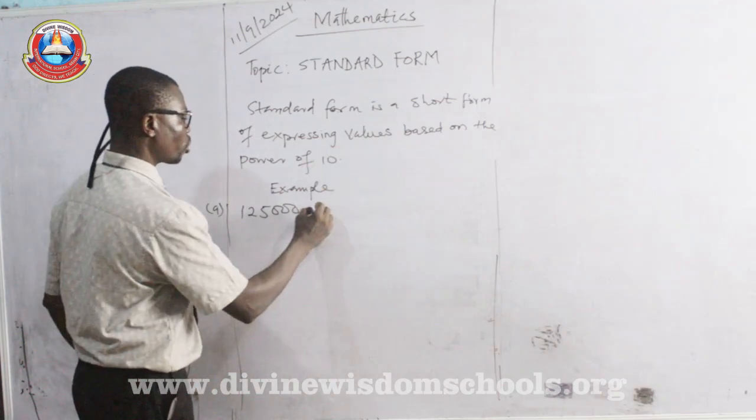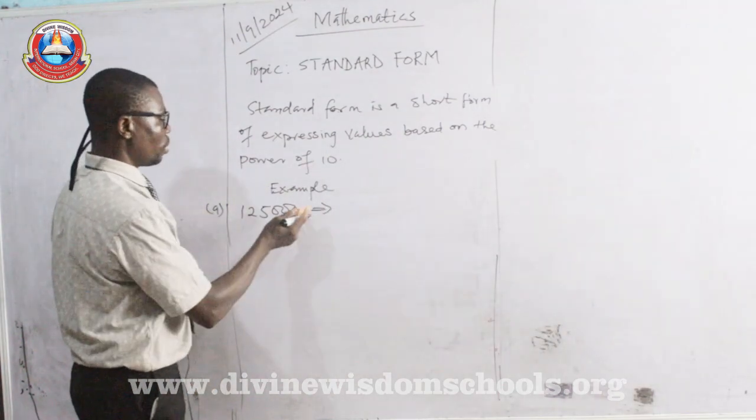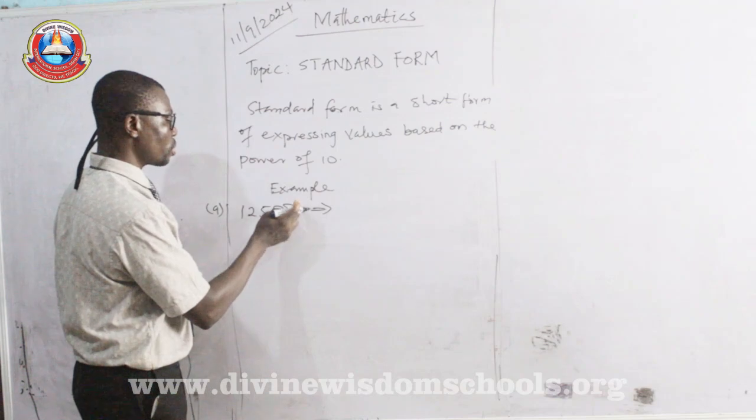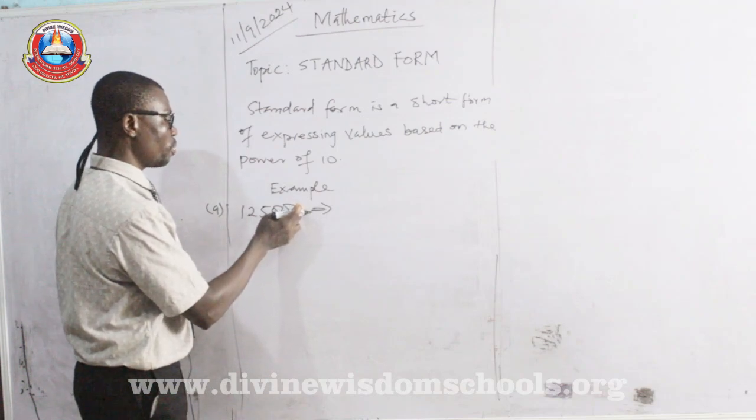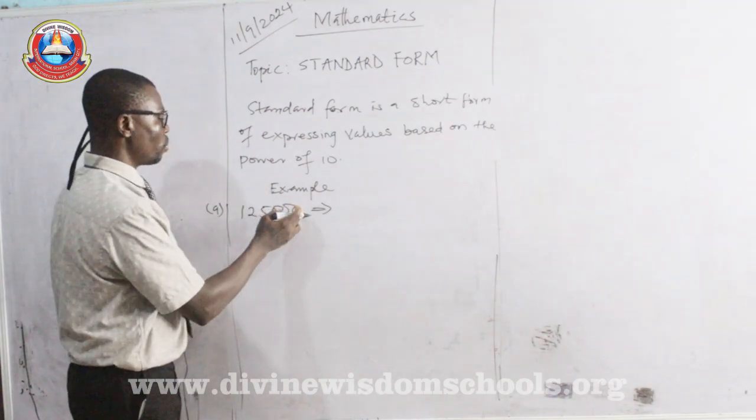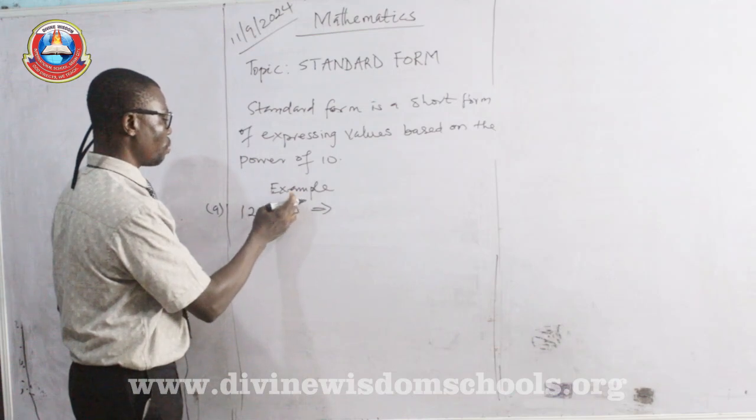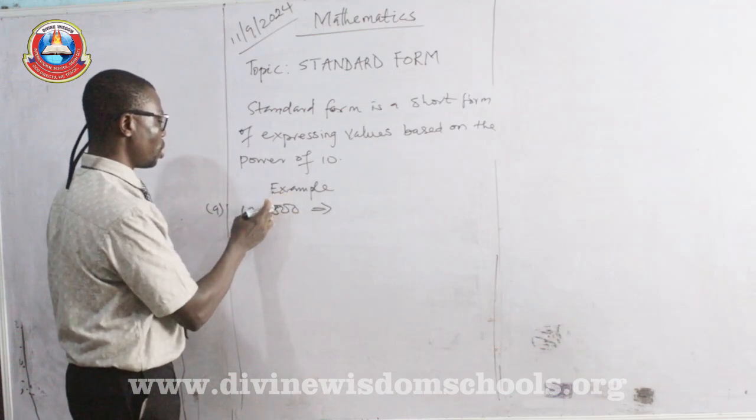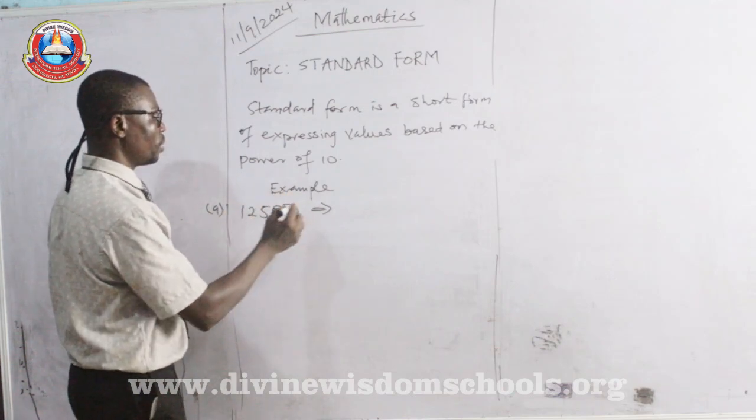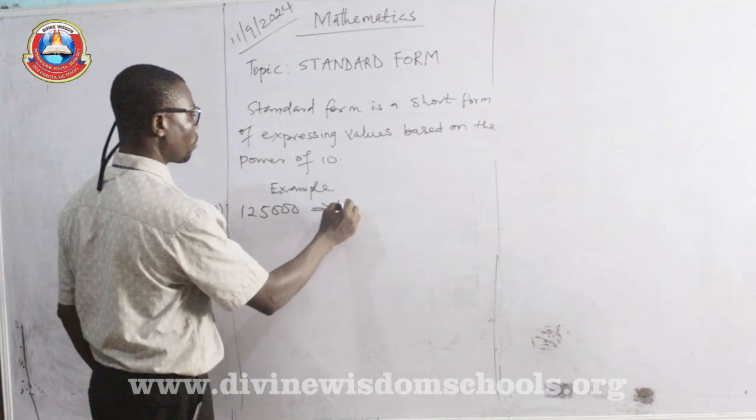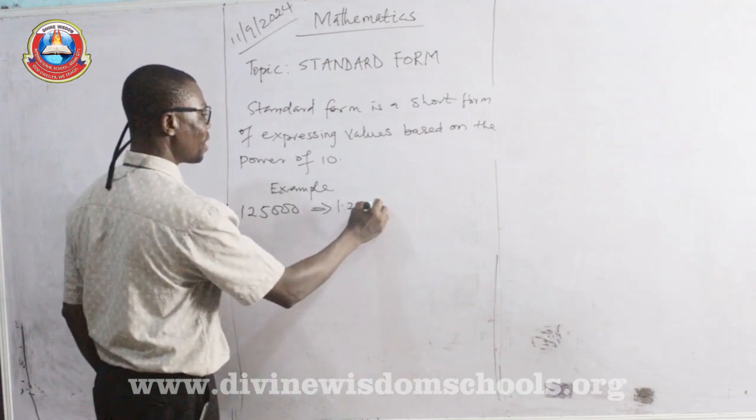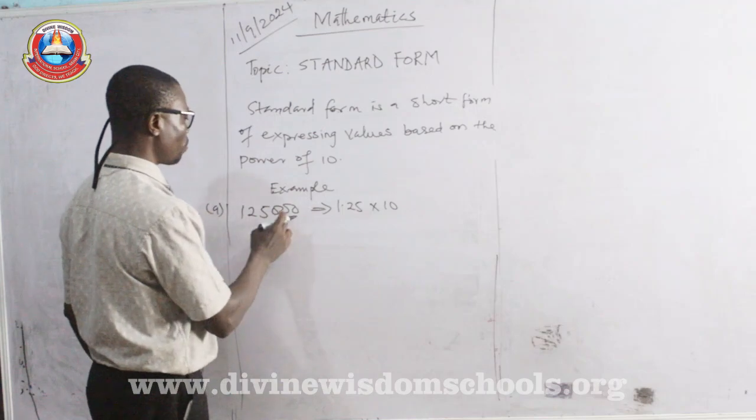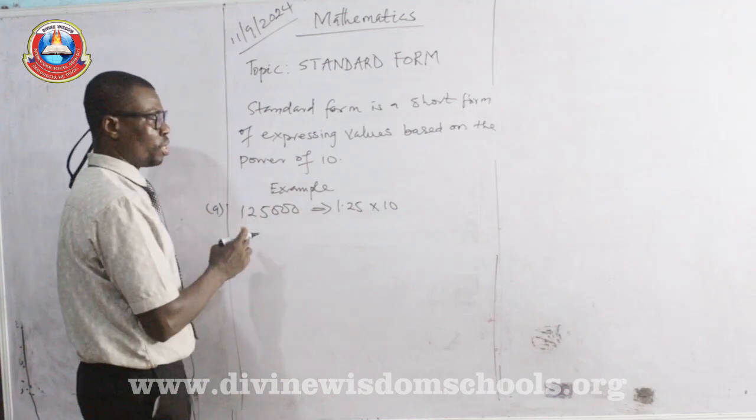And we are shifting from the right-hand side. Now, just watch what I am doing now. You have to shift from here. The decimal point is here already. Though it is not visible, but in Mathematics, you are seeing it there. So, you have it here. Now, we shift 1, 2, 3, 4, and 5. Then, we want to express it in Standard Form. It will be 1.25 times 10, raised to the power of the number of times you shifted.